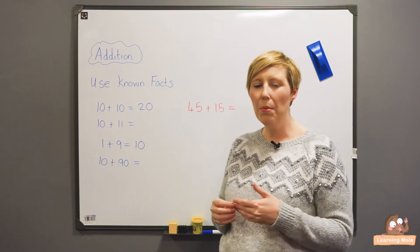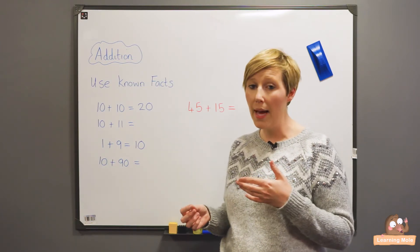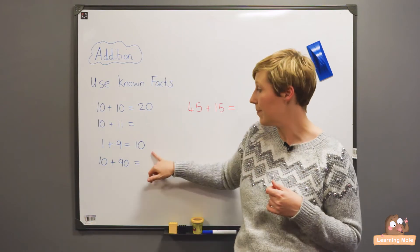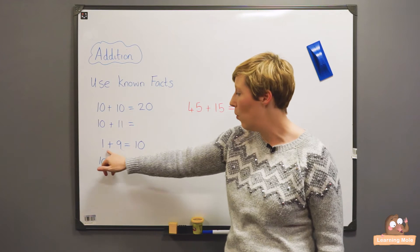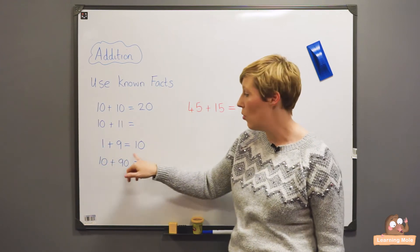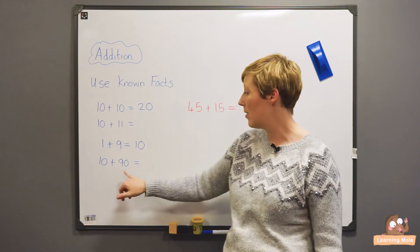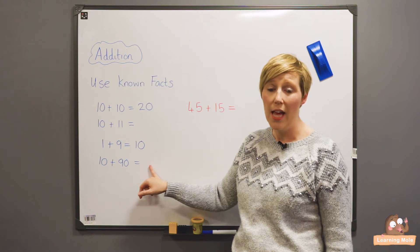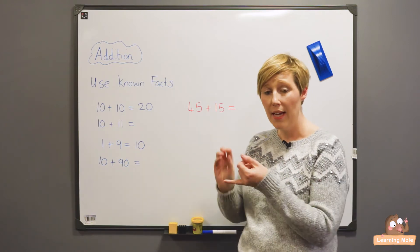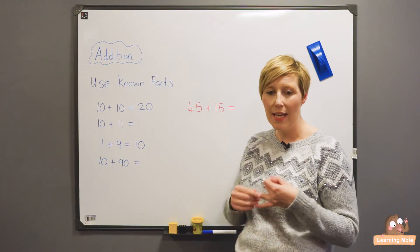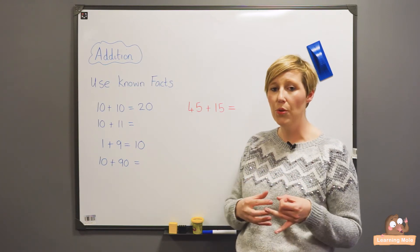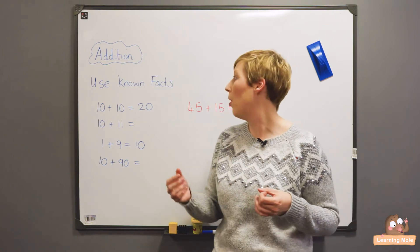So using known facts would probably fall into the remit of mental maths a lot of the time. Again, using those number bonds, those number facts. Knowing that 1 plus 9 is 10, so being able to apply that to 10 plus 90 equals 100. So it's just identifying what you know and then being able to apply it in different contexts. Can you use that to help you solve other problems?